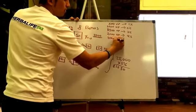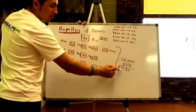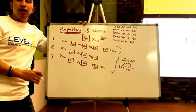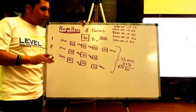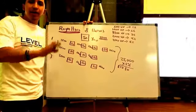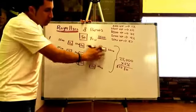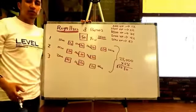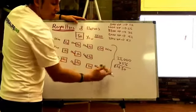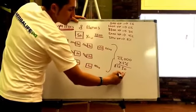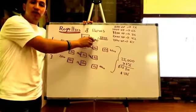At 2,500 volume points you get paid the full 5%. So let's say you have a big group but this month you only do 500 volume points — maybe you're on vacation and not working. Your group below you is making 25,000 volume points, but instead of $1,250, you'll only be getting $125 — just 1% royalties. That's why you need to do at least 2,500 volume points when you have a working group of supervisors.